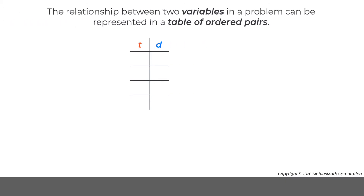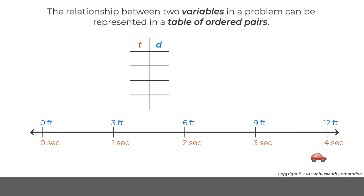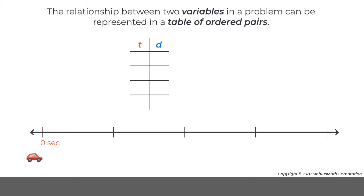The relationship between two variables in a problem can be represented in a table of ordered pairs. For example, a remote-controlled car travels at a maximum speed of 3 feet per second. The car starts moving at time t equals 0 seconds.